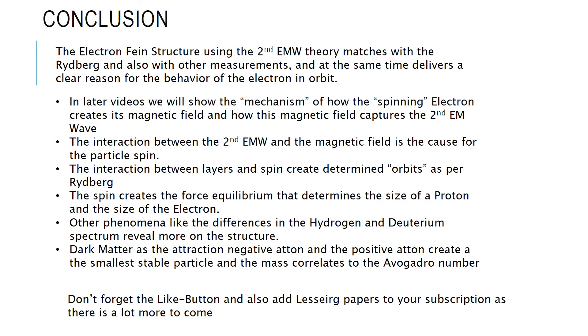The conclusion here is that the electron flying structure using the second electromagnetic wave theory matches with the Rydberg constant and also with other measurements. At the same time, it delivers a clearer reason for the behavior of the electron in the orbit. And as I will later show, if you add this spin, which is part of how the electron interacts with the second electromagnetic wave, you will then see why there are certain differences to the slight differences to the Rydberg. But fundamentally, the orbits are determined by the layers, and then the exact number is somewhat altered by the spin. And then that spin and the layers create an equilibrium to the charge of the proton, and thus you have this exact number of the Rydberg constant, or the Rydberg calculations.